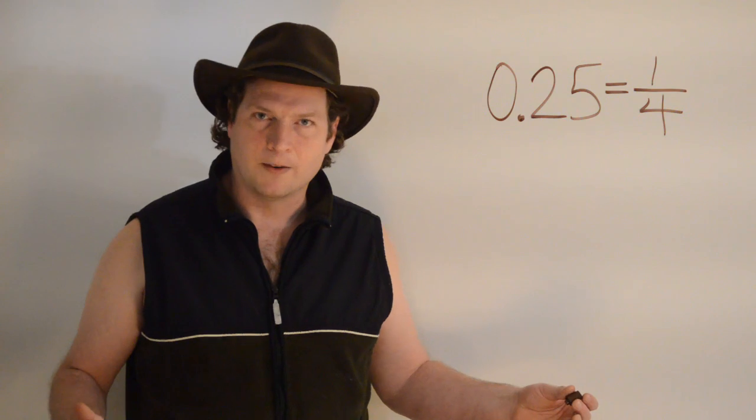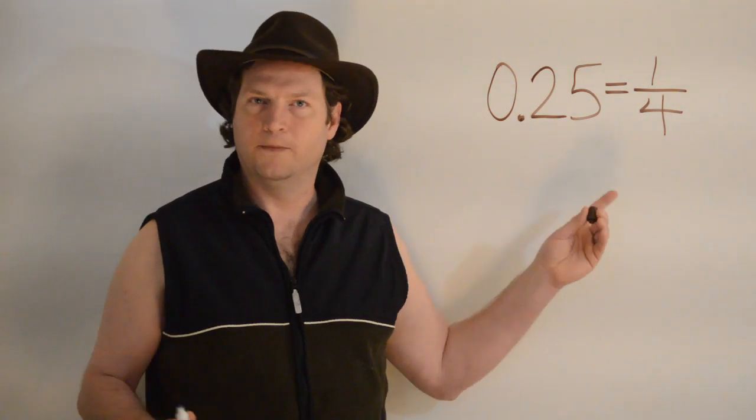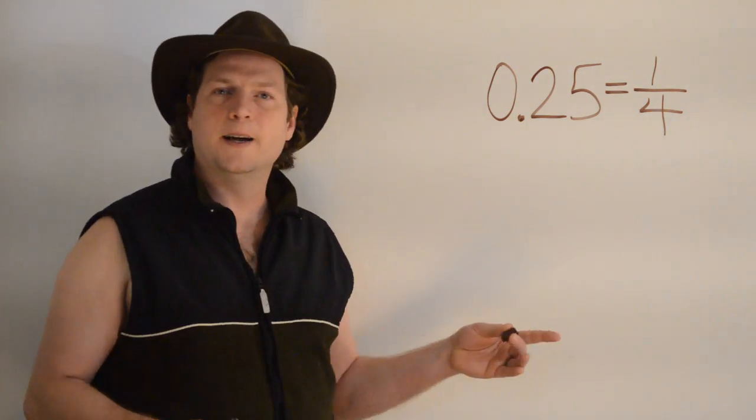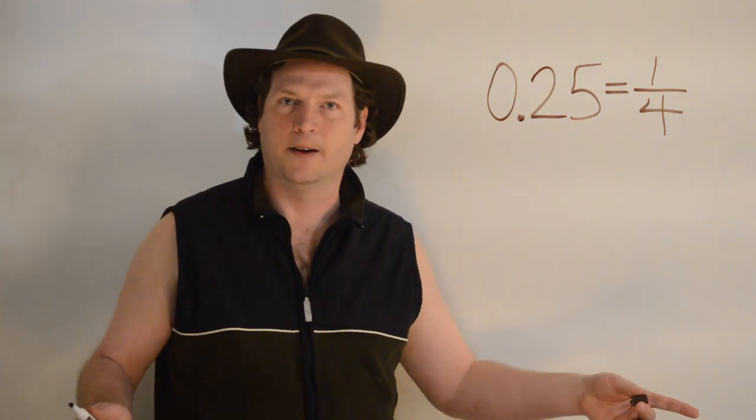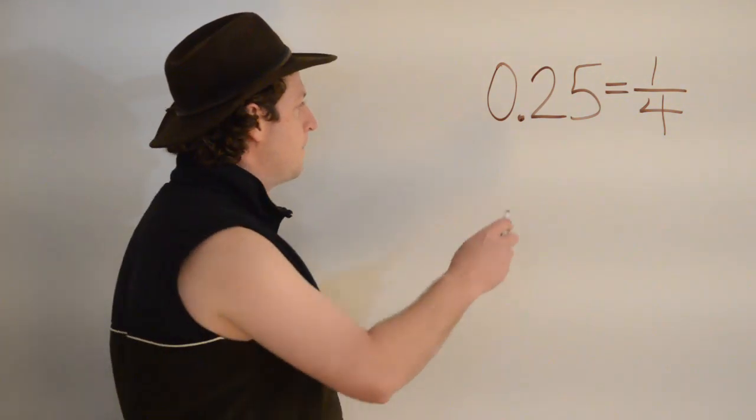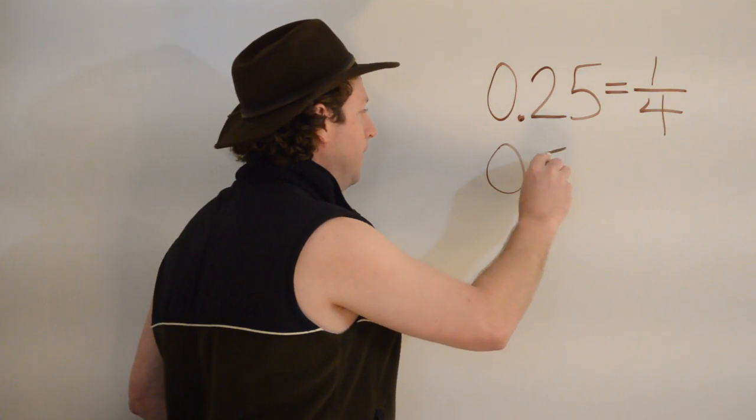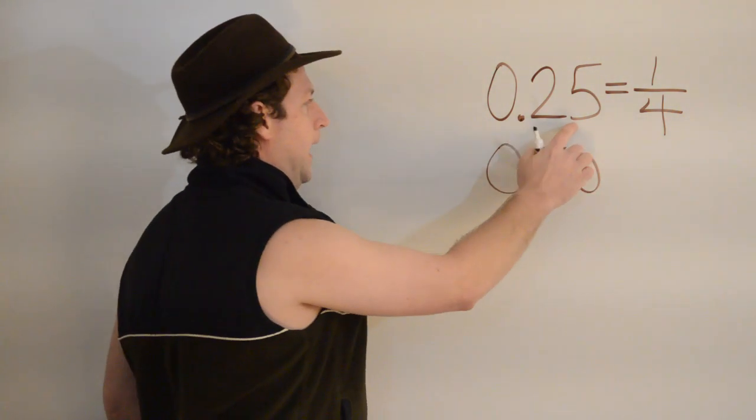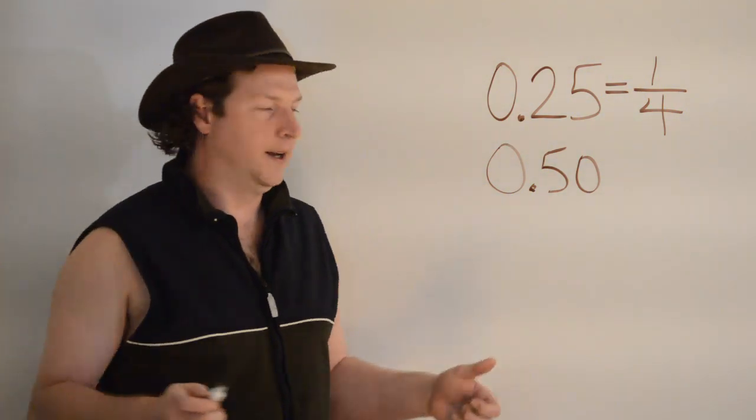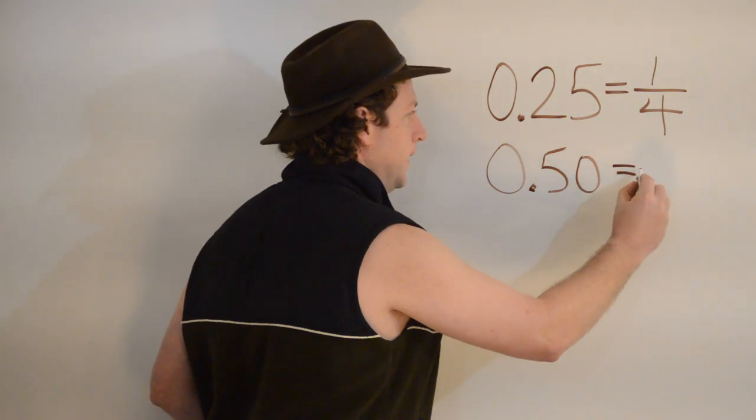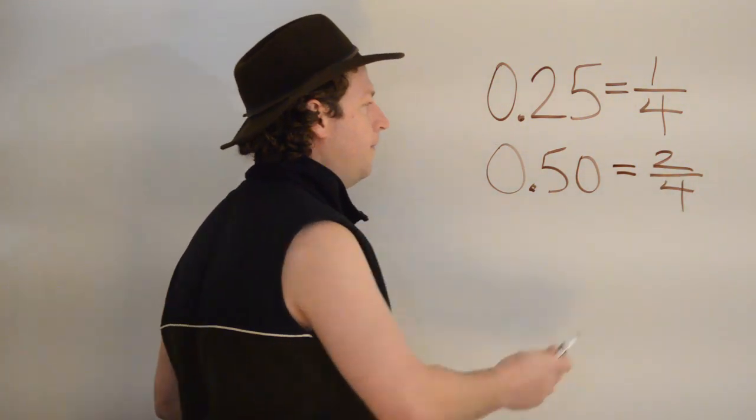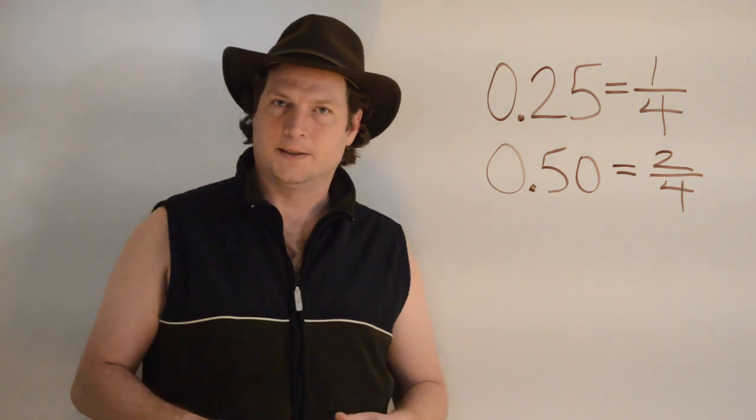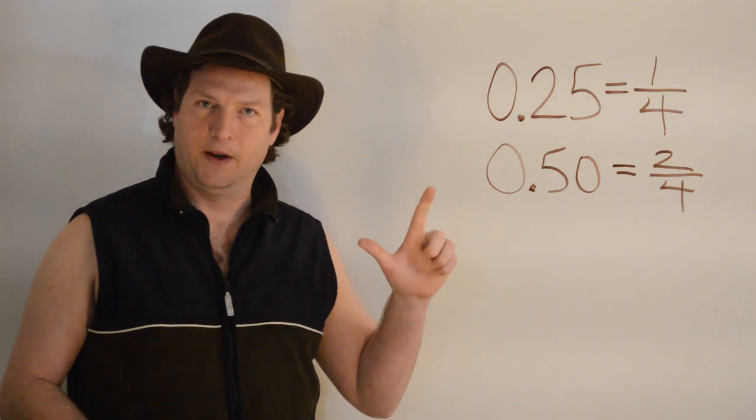Once you have memorized some of the easy ones, like point two five equals one-fourth or one-quarter, you can always come up with other ones by adding them together or just thinking about it. So, zero point five zero is really like twenty-five plus twenty-five is fifty. So, I know that this is two over four or one-half because it's just two twenty-fives. Just like twenty-five plus twenty-five is fifty.